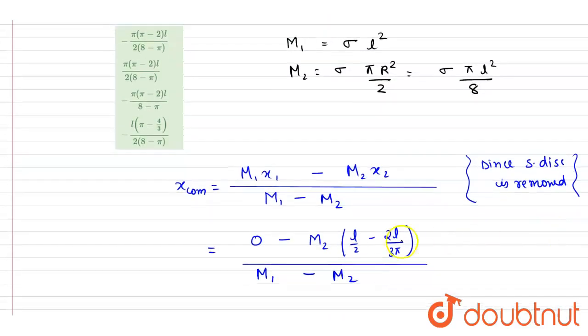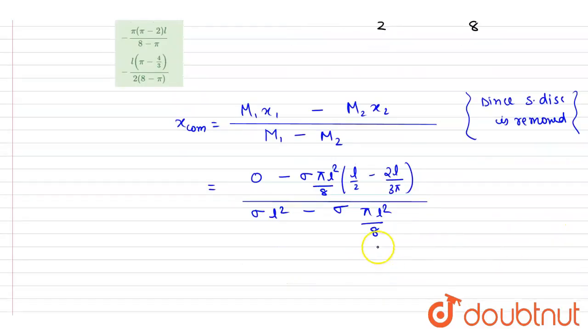You can put the value of m₁ and m₂ here. It is also calculated, so we will write down m₂ is sigma π l² by 8. Here I will write down sigma π l² by 8.